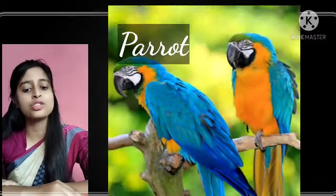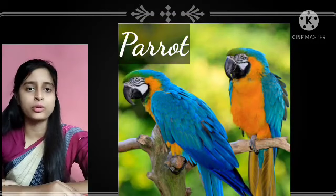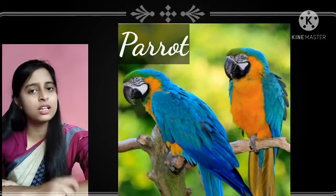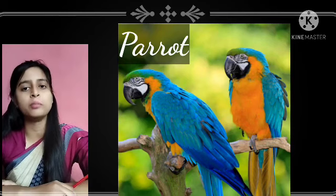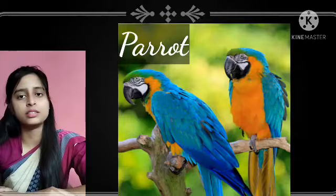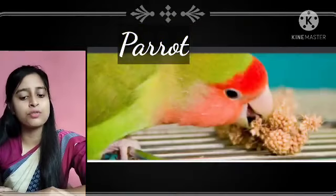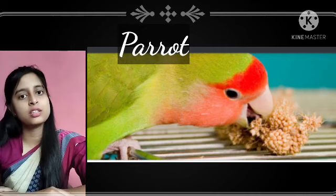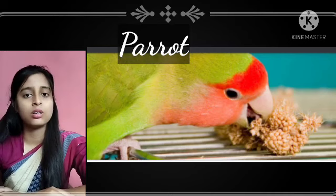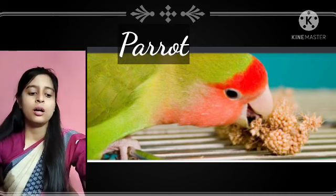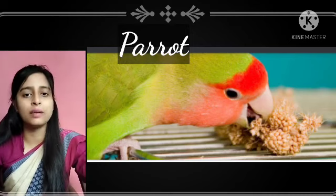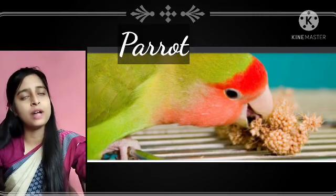Similarly, a parrot also has a short, hook-like beak, as you can see on your screen. A parrot's beak helps it to crack nuts, peel the skin of fruits, and eat the pulp. A parrot's beak also helps it to climb trees. That is why these birds have strong, sharp, and hook-like beaks.